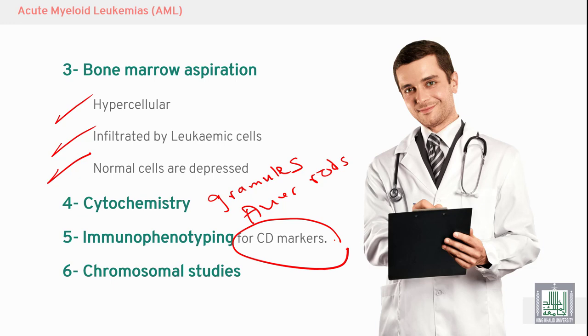Immunophenotyping uses immunological markers or cluster of differentiation (CD) markers to diagnose subtypes of AML: CD41 for M7, glycophorin for M6, and monocytic markers for M4 and M5.